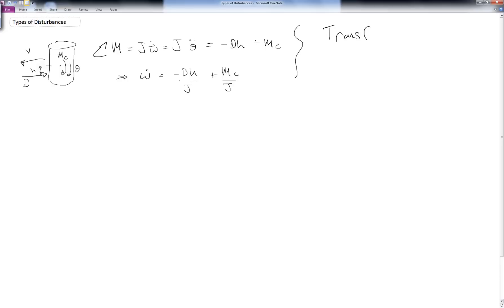We can find the transfer function for this particular system. And I'm going to solve for, notice this is equal to theta double dot, so I'm going to solve for s squared theta of s is equal to minus dh over j plus mc, and this is now of s, over j. Finally I can solve for theta of s as being minus dh over j s squared plus mc of s over j s squared.